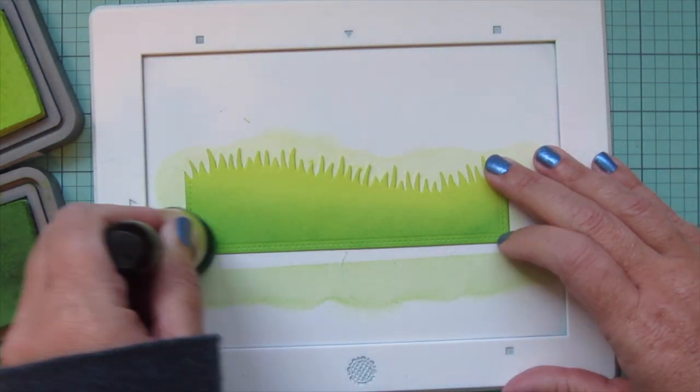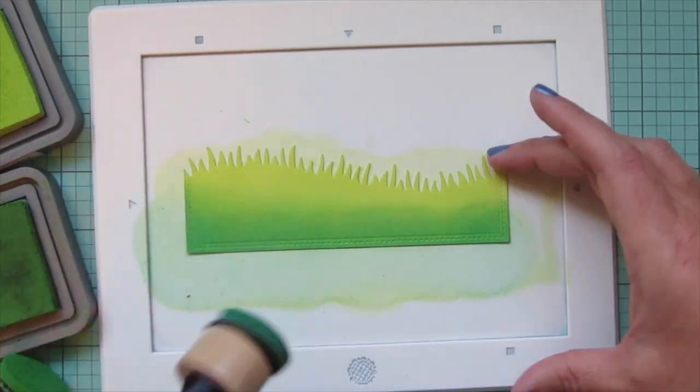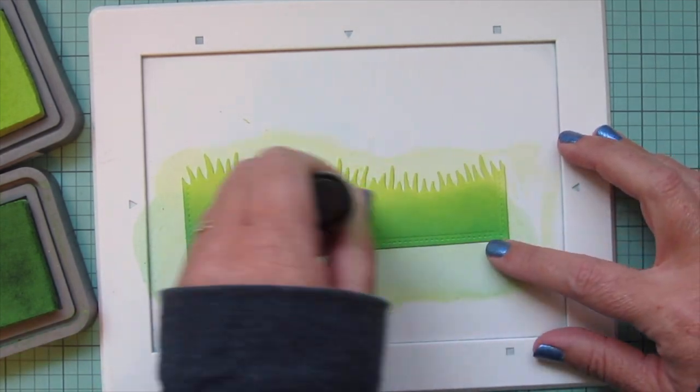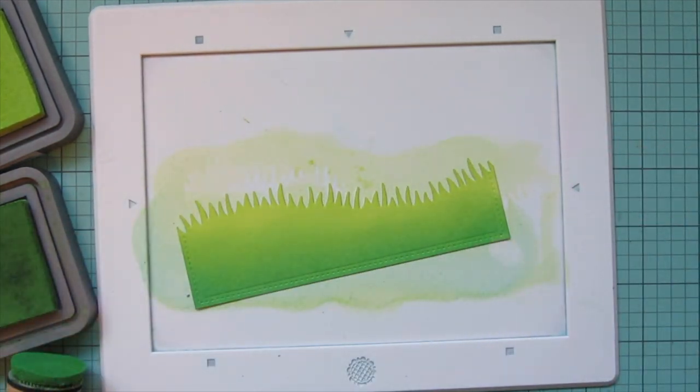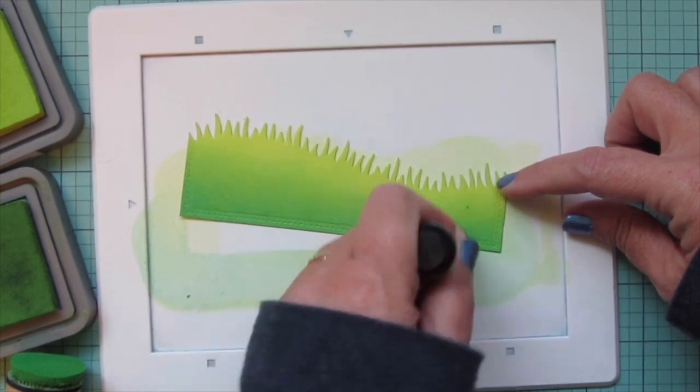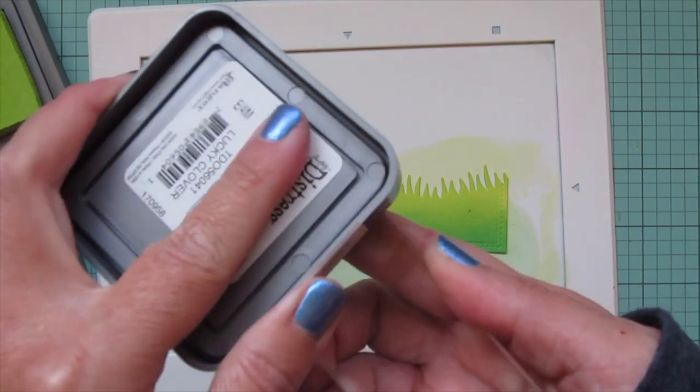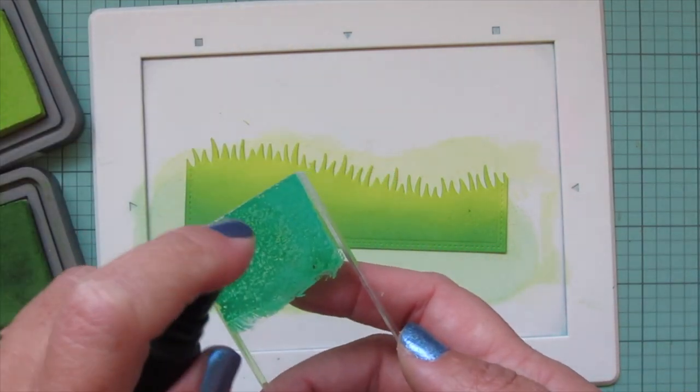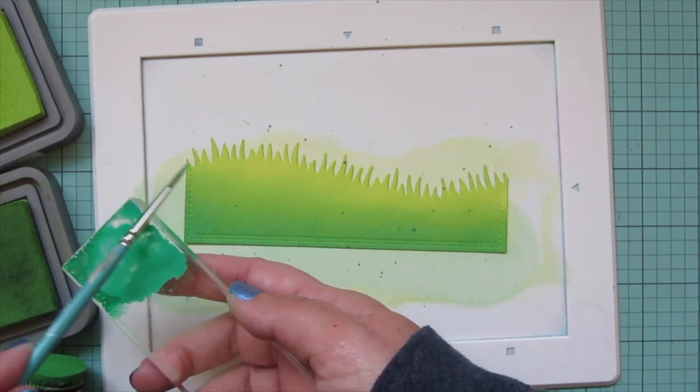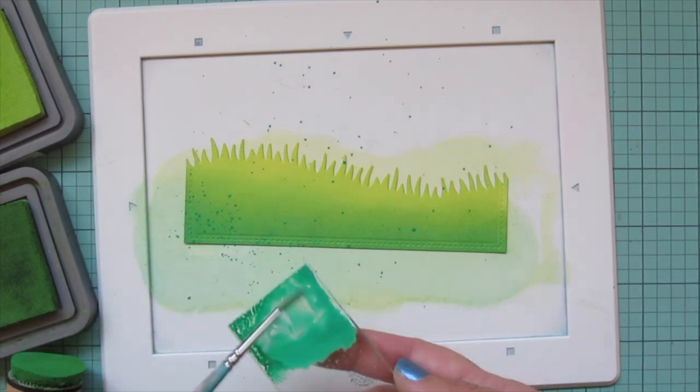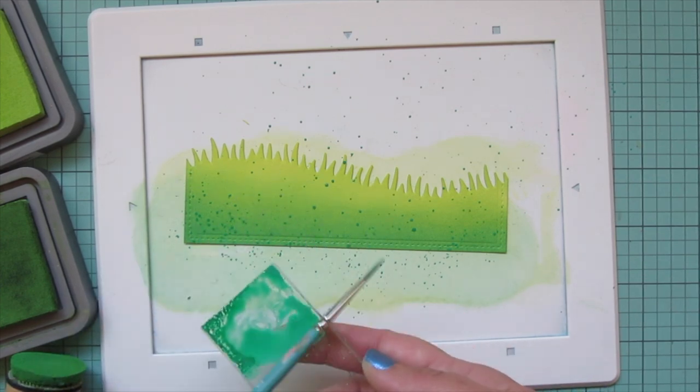I wanted to darken that up even further so I am going to bring in some Lucky Clover, but I'm just going to use a little bit of this. I don't want to get too heavy-handed there. Then I'll go back to the Mowed Lawn and blend that out and then back to the Twisted Citron to just make everything blend really nicely. Once I am done with that, I am also going to take some of that Lucky Clover and press that onto the block and water that down so I can do some splatter detail with this shade as well, just to make both pieces of the background look more consistent. It just adds a little bit of movement and texture to the background, which I think is nice.